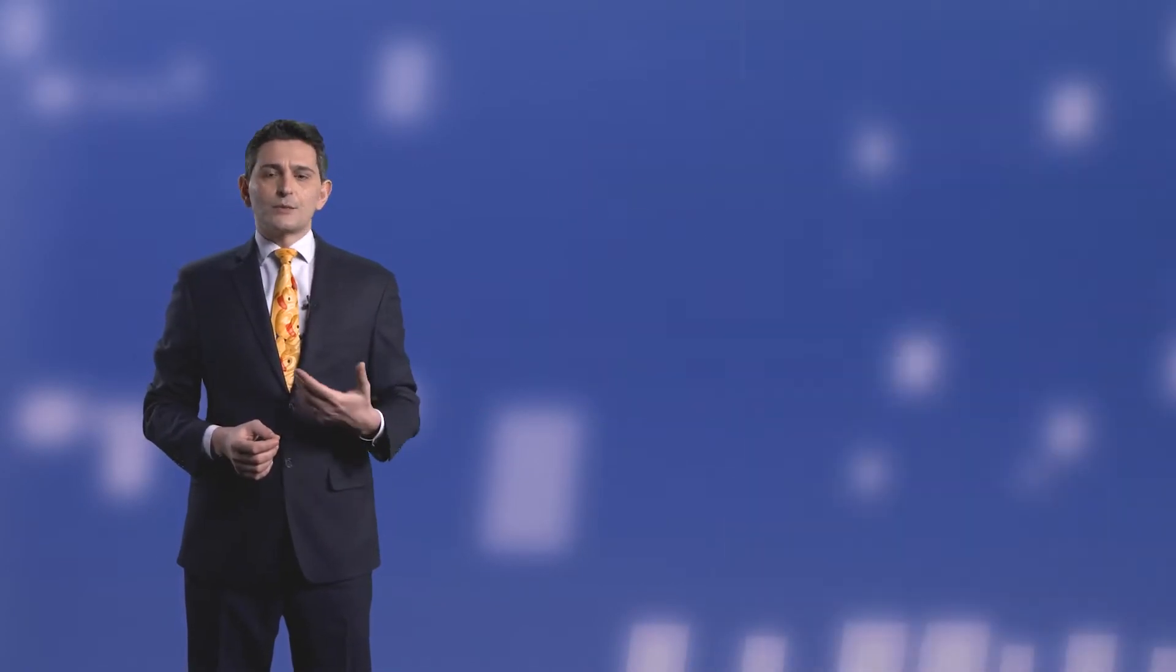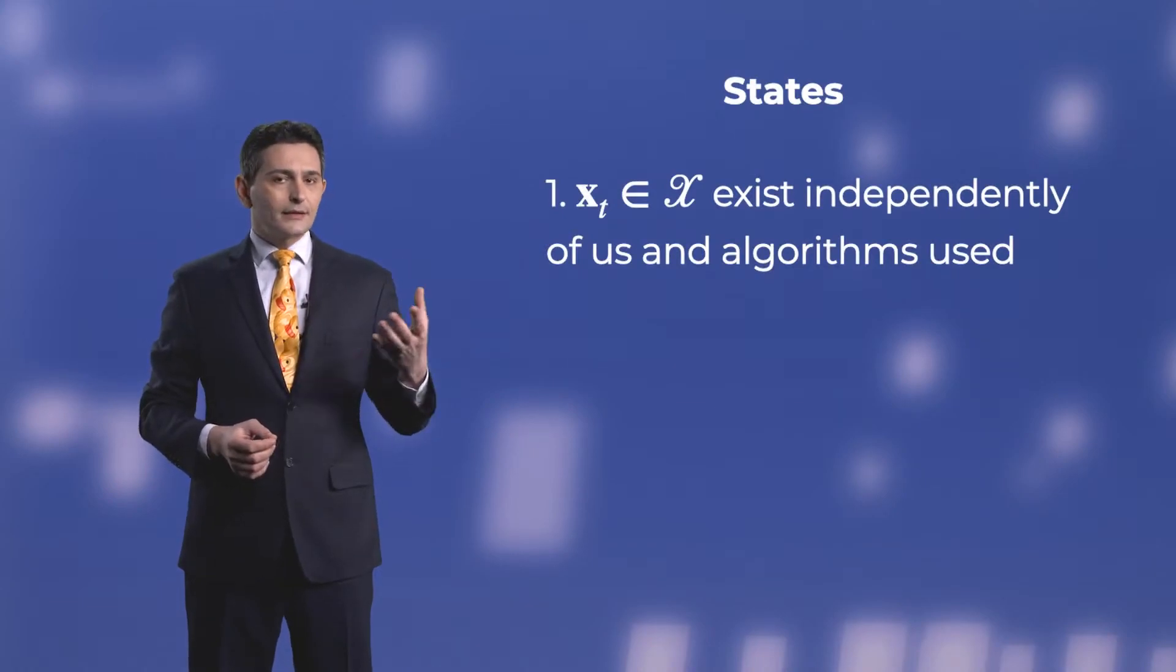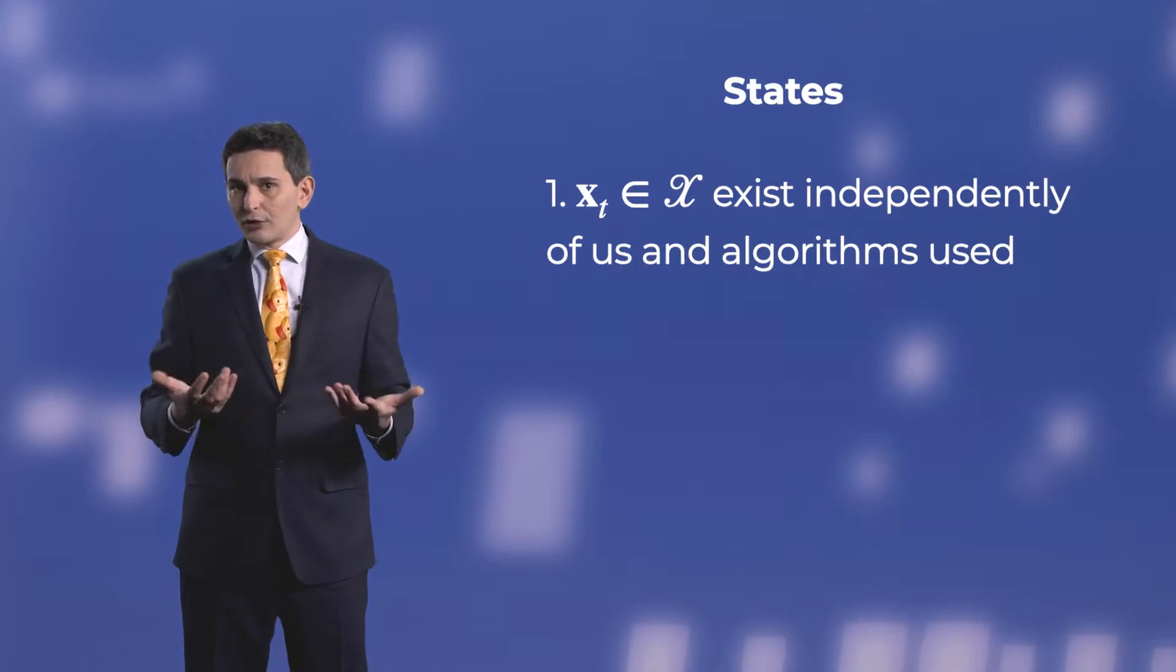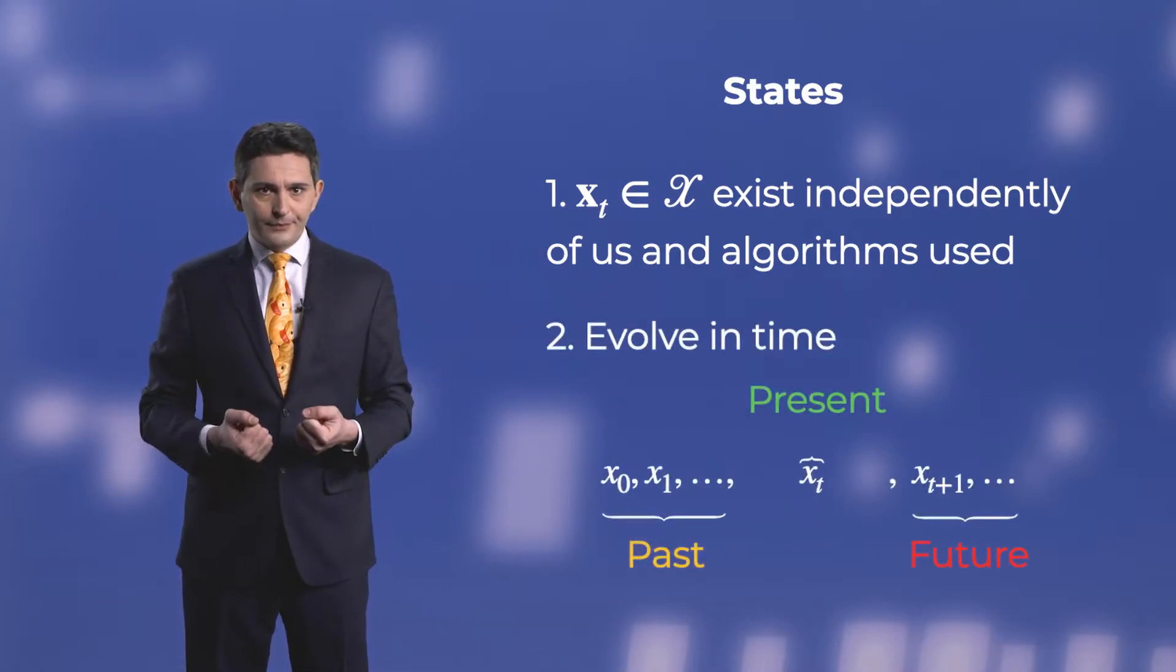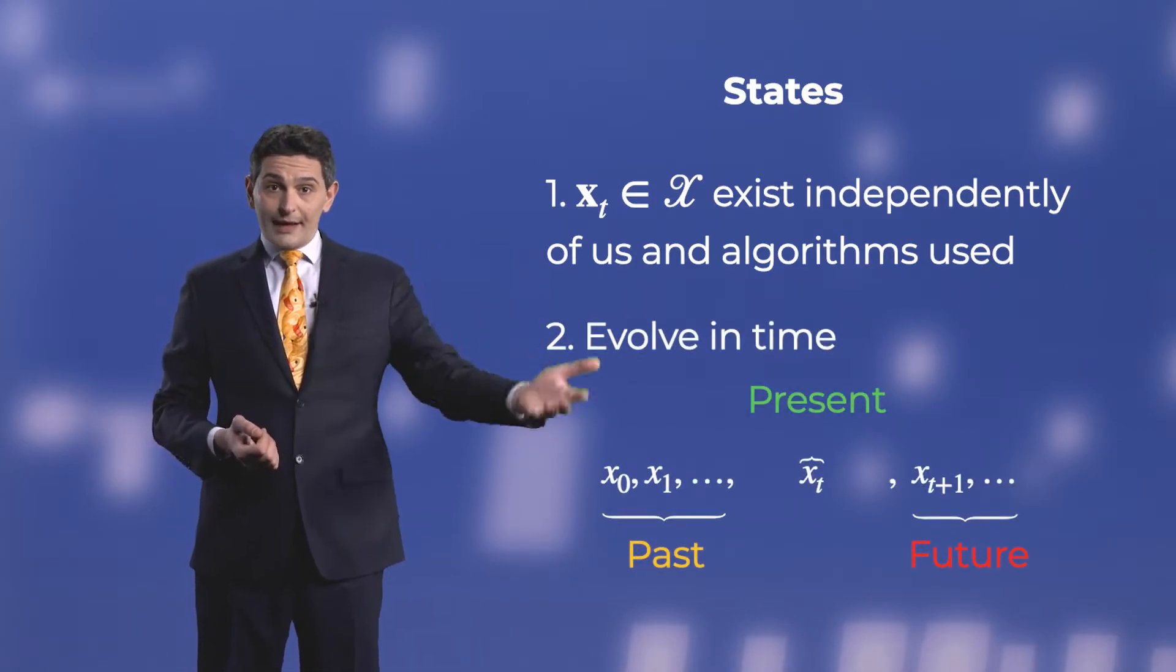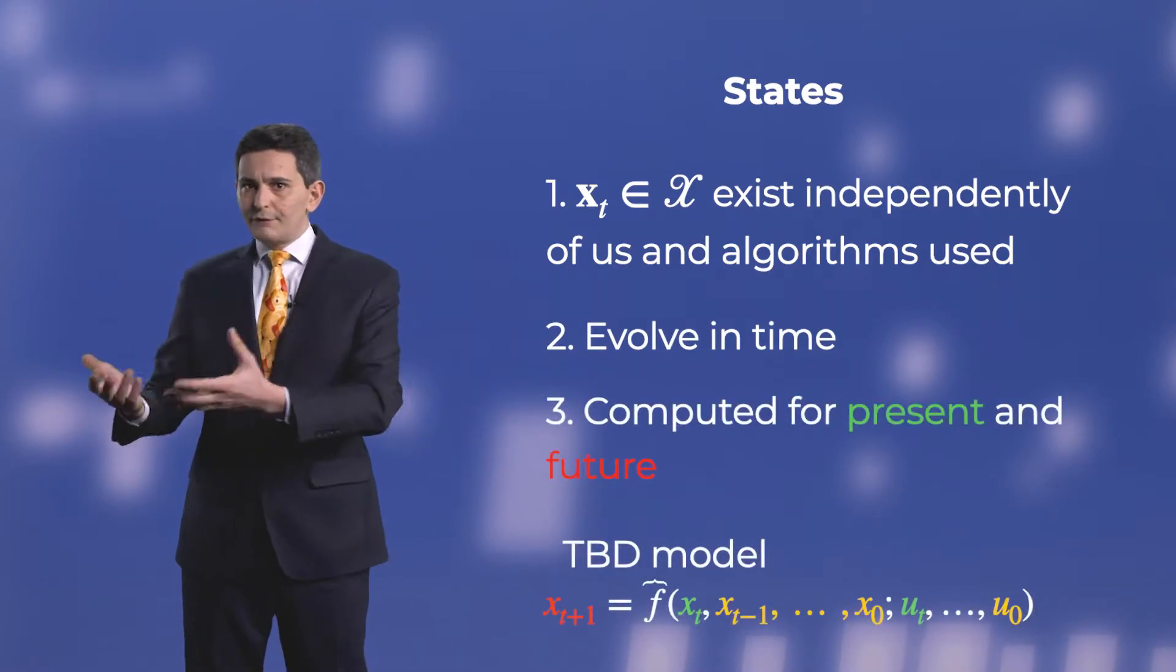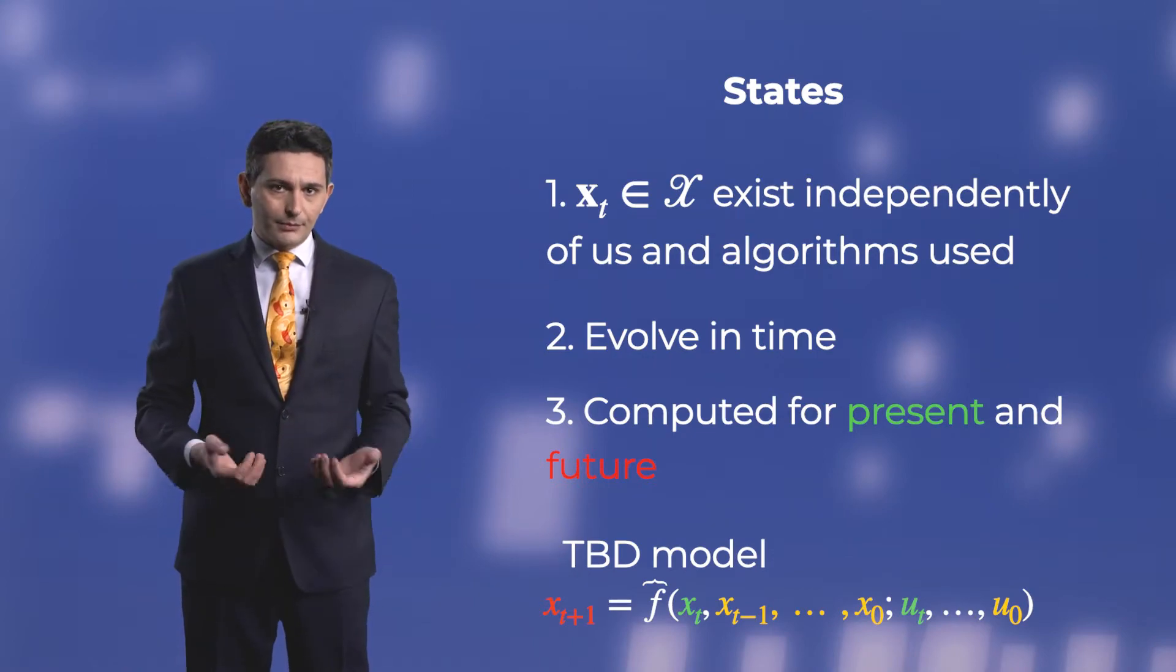To quantify representations we use states. The state of a robot and of the world exists independently of us and the algorithms that we choose to determine it. The state evolves over time and the robot will need to estimate the present and future state on the fly, so it should be efficiently computable.